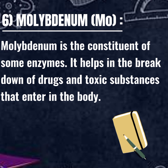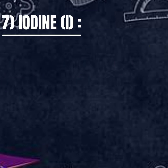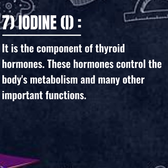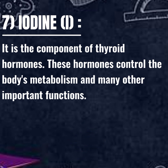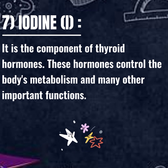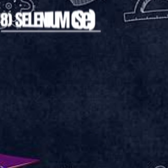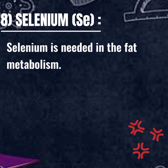Molybdenum: it is the constituent of some enzymes. It helps in the breakdown of drugs and toxic substances that enter the body. Iodine: it is the component of thyroid hormones. These hormones control the body's metabolism and many other important functions.